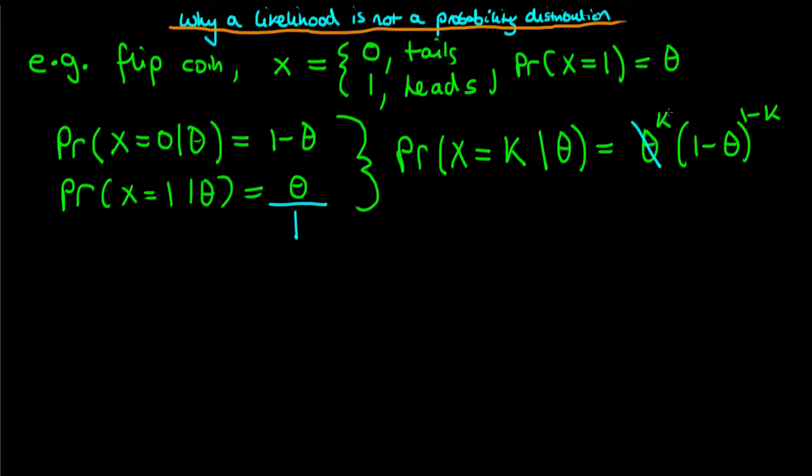Alternatively, if k is equal to one, the first part of this expression disappears and we're just left with one minus theta to the power one. In other words, we return back our probability of obtaining tails. So now we're going to consider two different circumstances.